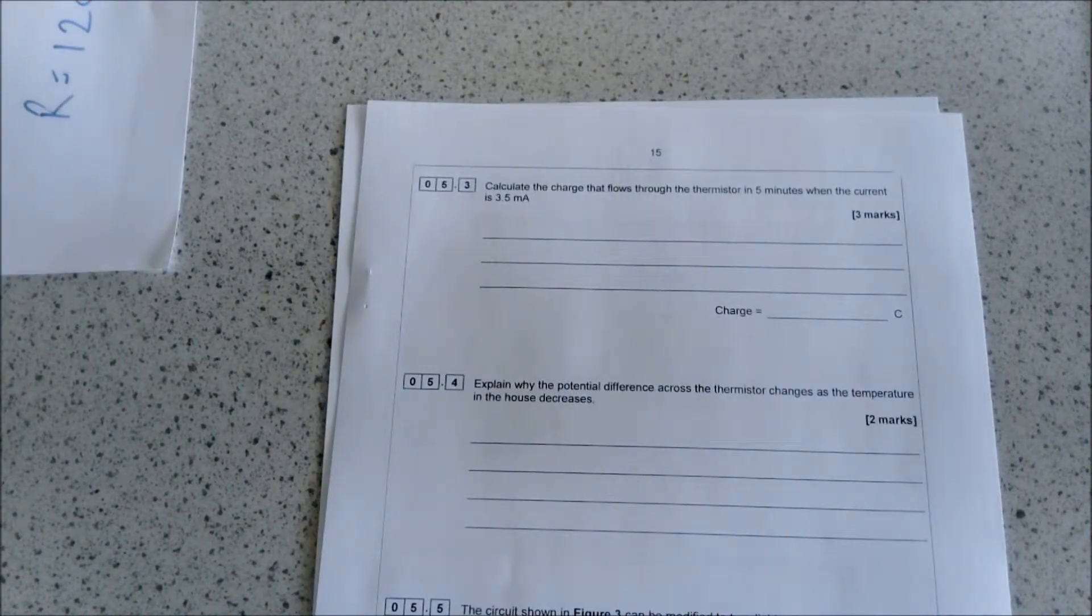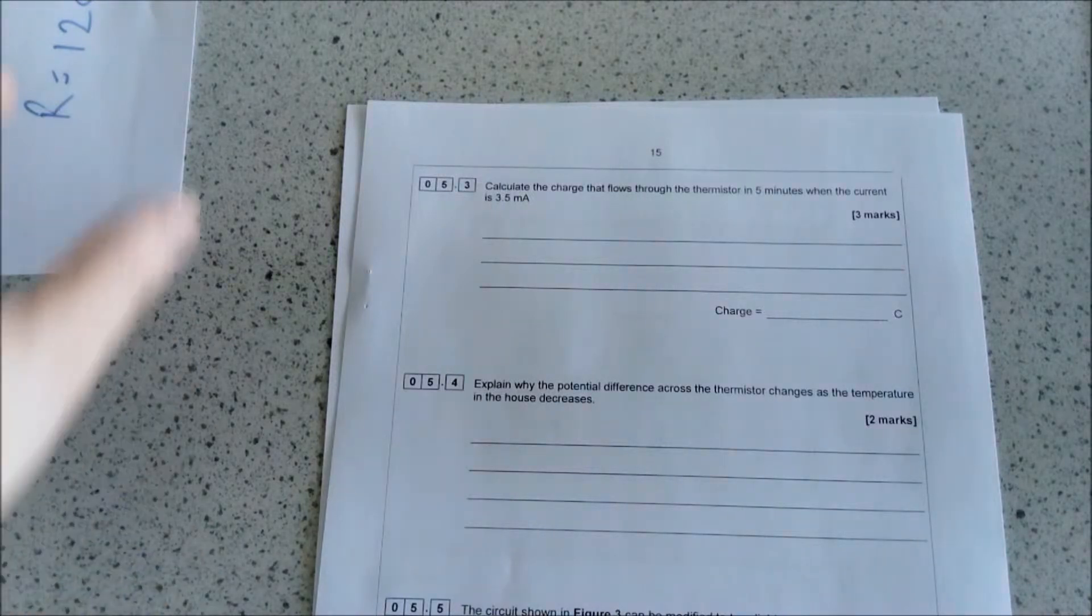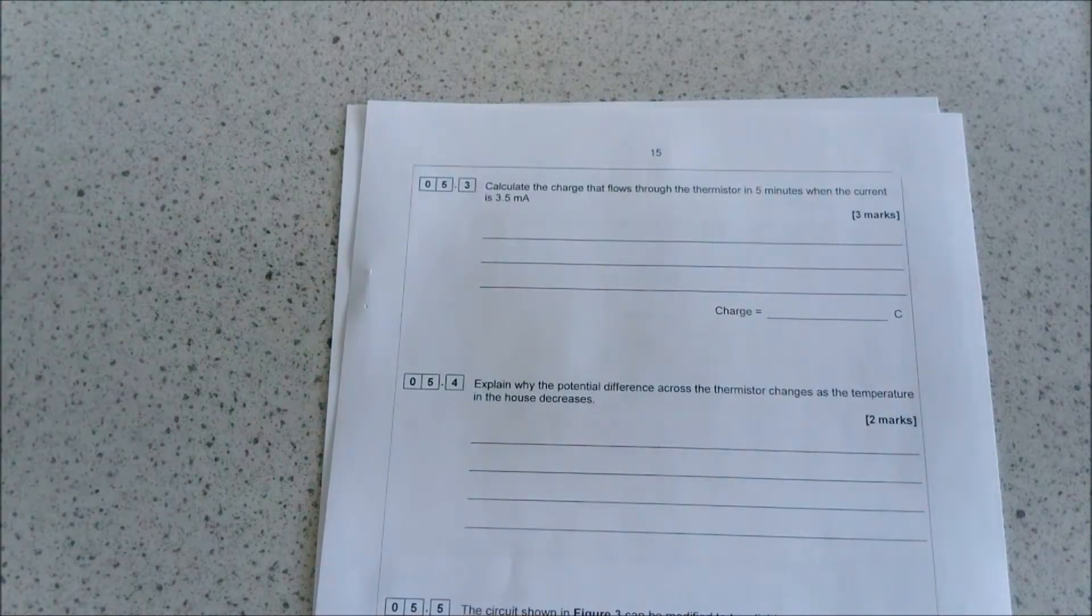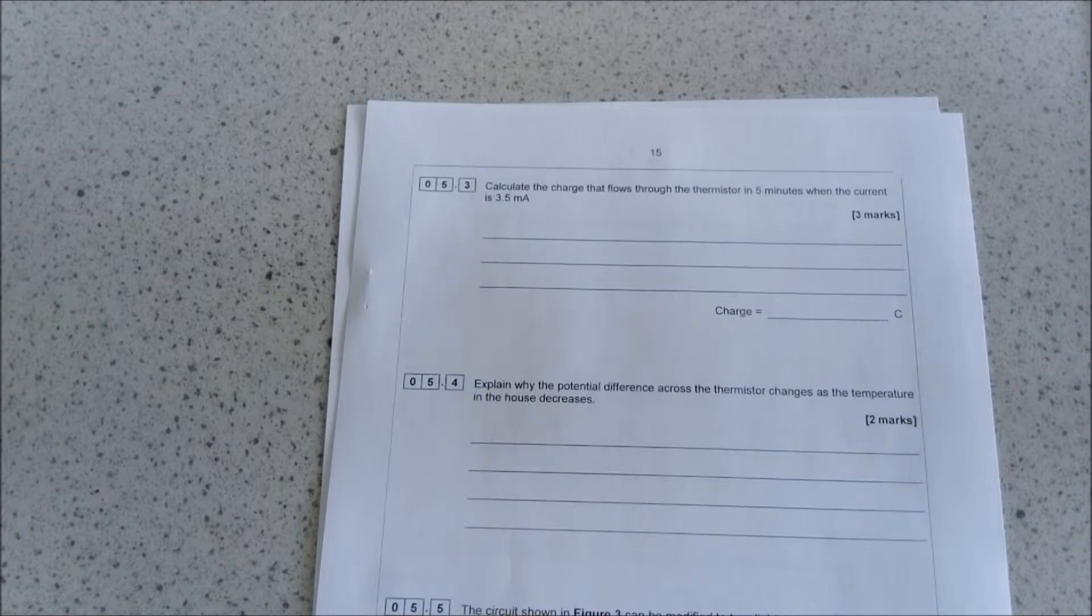The question then goes on and says: calculate the charge that flows through the thermistor in five minutes when the current in the circuit is 3.5 milliamps. This is another occasion when it's really important to have remembered your equations, because just knowing the equations will get you easy marks.